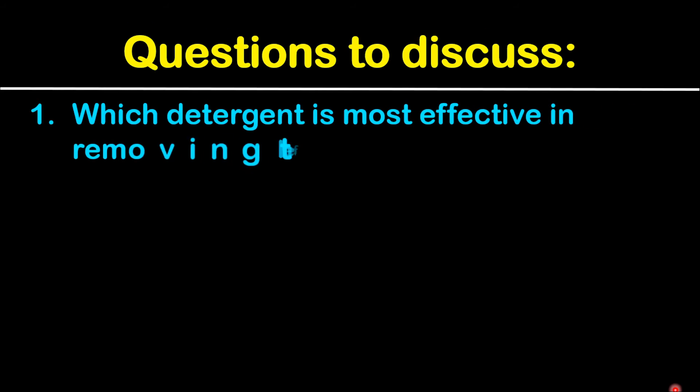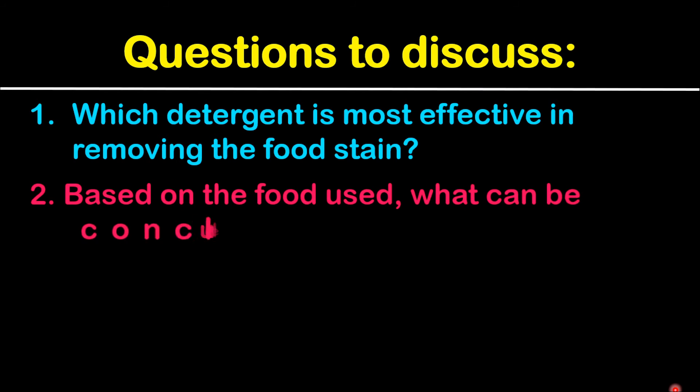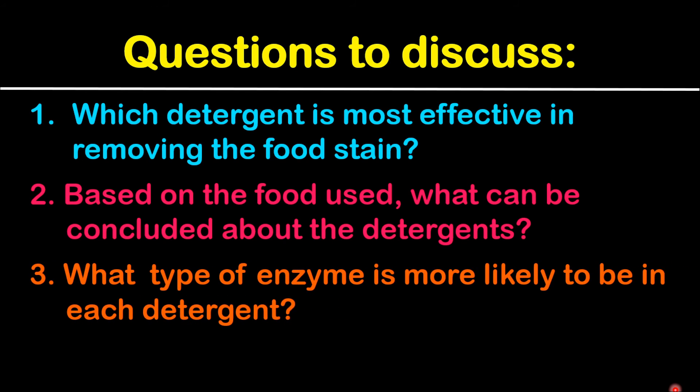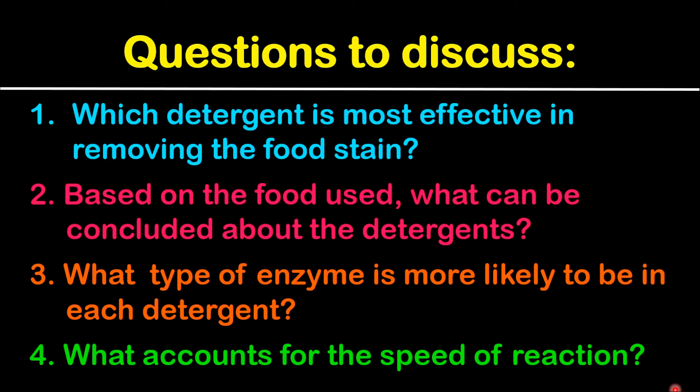Now some questions for discussion. One, we can discuss which detergent is most effective in removing the food stain. We can also discuss, based on the food used, what can be concluded about the detergents. We can also discuss what type of enzyme is more likely to be in each detergent. We can also discuss what accounts for the speed of reaction.